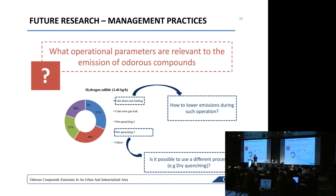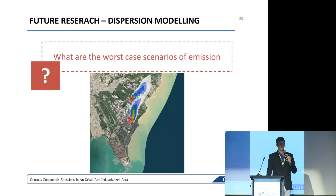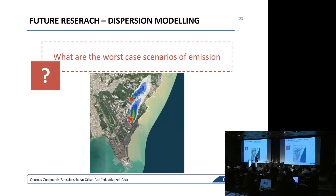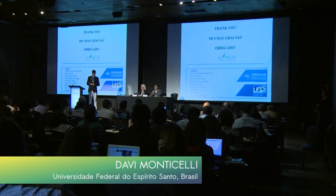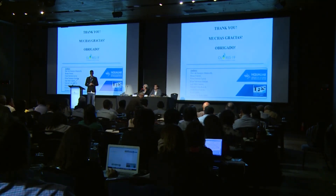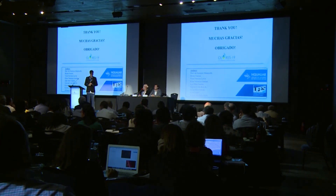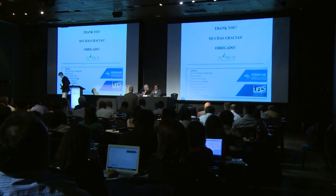Here are some questions for future research. First, what other sources are missing a VOC or TRS profile for a complete inventory? This was the main difficulty — we need more data on chemical emission profiles from every kind of industry to establish a good standard. There is also the question of what operational parameters are relevant to odorous compound emissions: for example, in hydrogen sulfide from a coke plant or coal loading, can a different process lower emissions? Finally, we will advance to the next stage — studying worst-case emission scenarios and dispersion using the CALPUFF dispersion model, and correlating this with the odor perception network established in the communities.